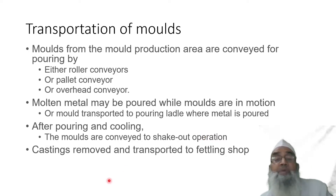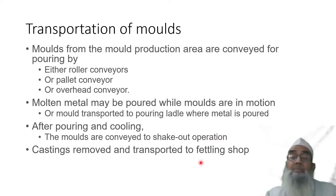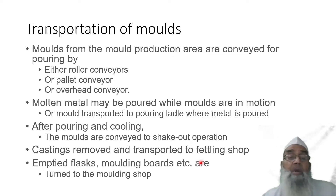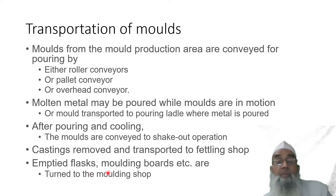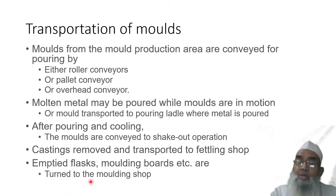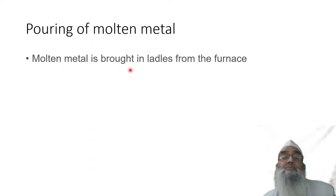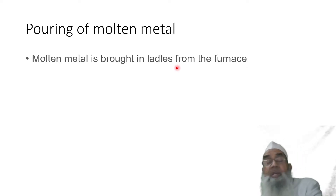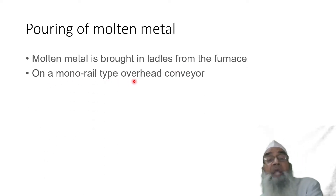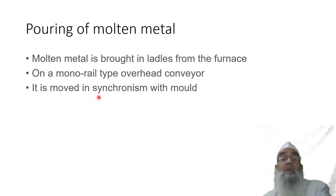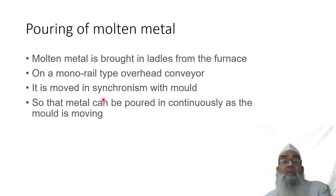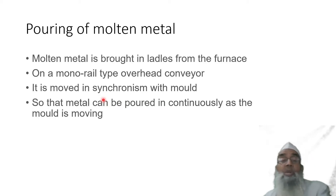After pouring and cooling, molds are conveyed to the shake-out operation. The castings are removed and transported to the fettling shop after shake-out. Emptied flasks and moulding boards are returned to the moulding shop so that the operation can be repeated. Molten metal is brought in a ladle from the furnace on a monorail-type overhead conveyor, with its movement synchronized with the mold so that metal can be poured continuously as the mold is moving.